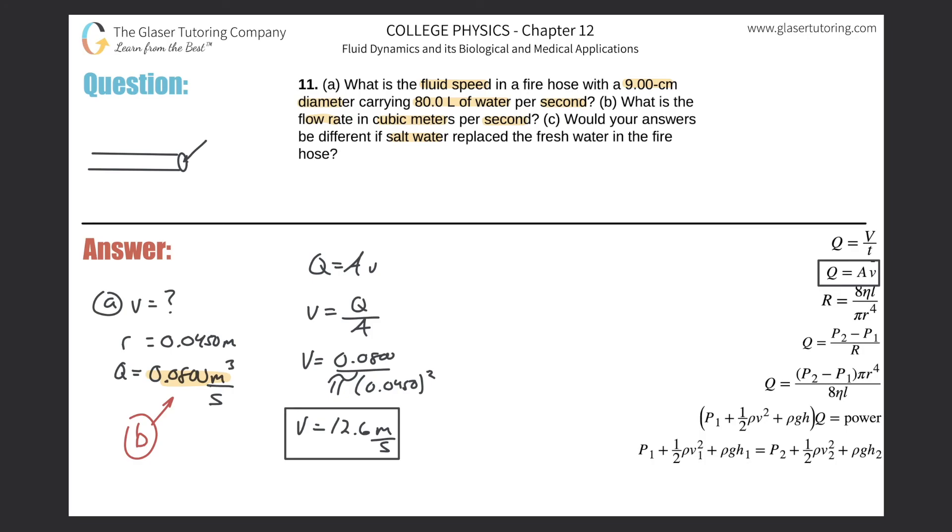All right. So again, the only difference between real water and salt water will be its density. Density doesn't show up at all in any of the calculation we've just done. So the answer for letter C would be a no, it wouldn't change. It wouldn't be different.